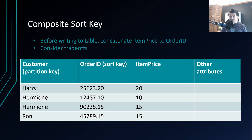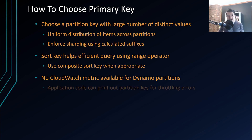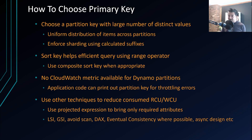There are trade-offs to composite sort keys — extra code and maintenance. Also, there is no CloudWatch metric available for DynamoDB partitions; you cannot see how many partitions exist or their individual performance. However, your application code can log the partition key for throttling errors and introduce corrective measures. Additionally, use projected expressions to bring only required attributes — pulling unused attributes burns RCU. Use LSI, GSI, avoid scans, use DAX (DynamoDB Accelerator), and use eventual consistency where possible since it consumes fewer capacity units than strong consistency.